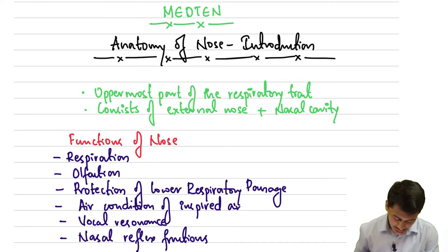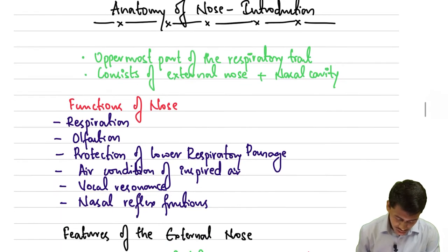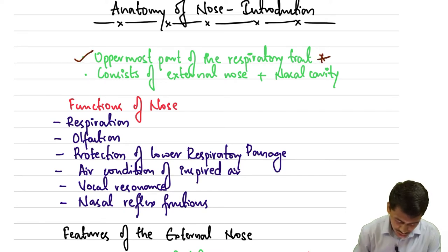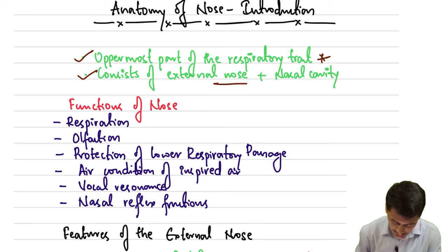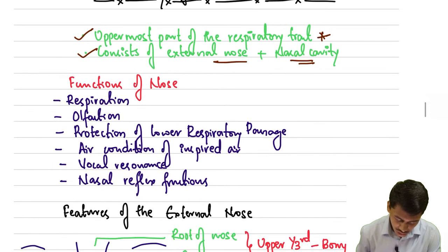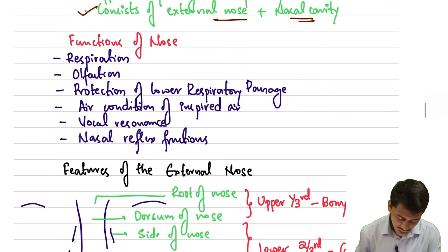Beginning with the anatomy of the nose, what is the importance of the nose? The nose is the uppermost part of the respiratory tract, and it consists of the external nose plus the nasal cavity.